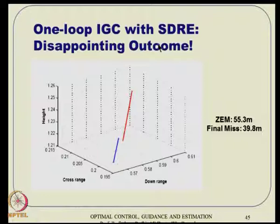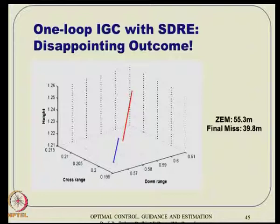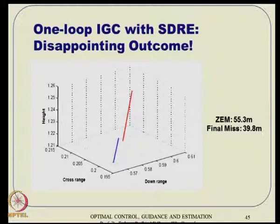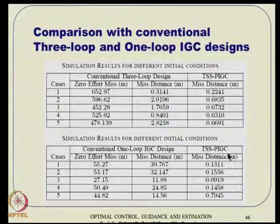A frustrating result: a one-loop IGC concept based on HDRE was implemented and tuned over several months. The disappointing finding was that if the initial zero-effort miss distance was around 55 meters, the IGC could only correct it to 39–40 meters — not much gain. In contrast, the conventional and partial IEGC designs achieve very low miss distances (sub-meter level) for initial zero-effort miss values of 500–600 meters, with partial IEGC values consistently lower than conventional ones.